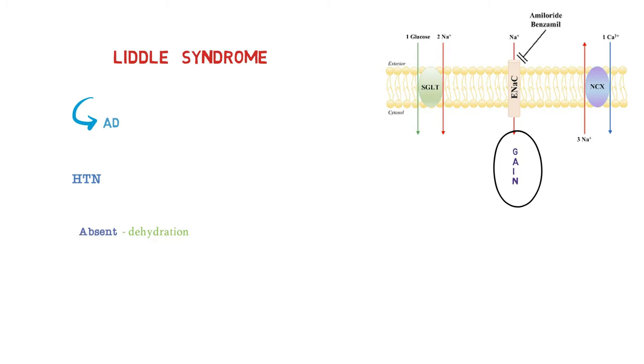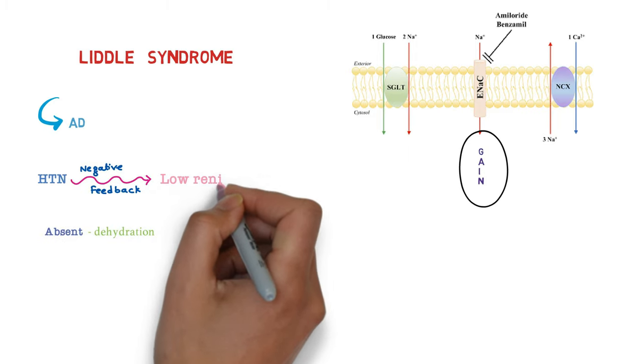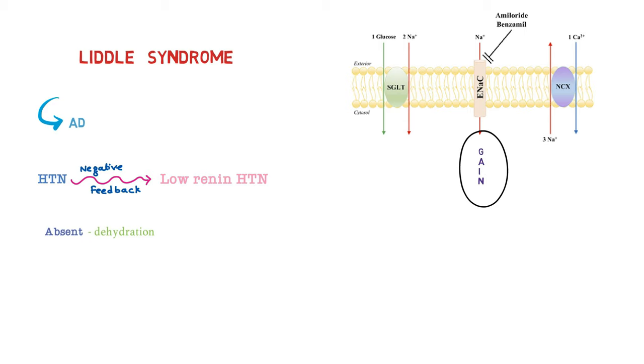Because of hypertension there is negative feedback on renin and it causes the low levels of renin and hence Liddle syndrome is also low renin hypertension. Amiloride can be used for the treatment of Liddle syndrome.